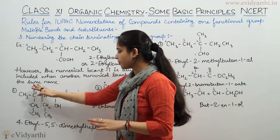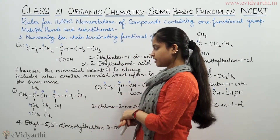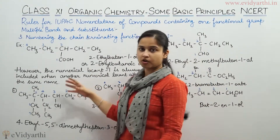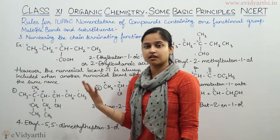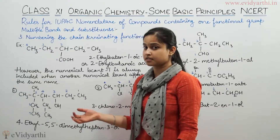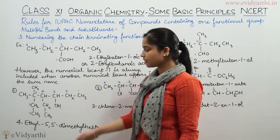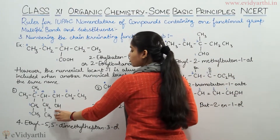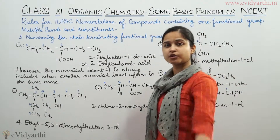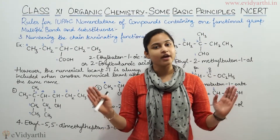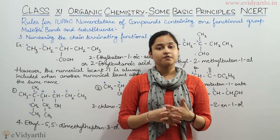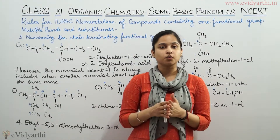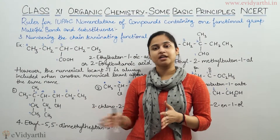First example — let's take a look at the compound. First, identify which functional group is present. Is it an aldehyde, ketone, carboxyl, or alcohol? You have an OH functional group. So obviously this compound is an alcohol. We will be having our secondary suffix as '-ol'. So this compound's name will end with '-ol'.